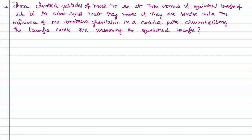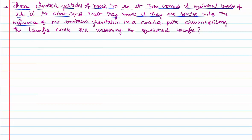Hi everyone, welcome to this video lesson. In this video lesson we are solving a problem from the concept of gravitation. The problem is about the inverse square law of attraction between two masses separated by a certain distance. There are three identical particles each of mass m, placed at the three corners of an equilateral triangle of side a. At what speed must they move so that they revolve under the influence of one another's gravitational force in a circular path circumscribing the triangle, while still preserving the equilateral triangle?